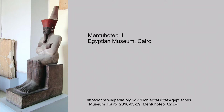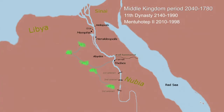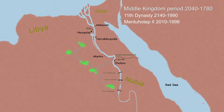It was Mentuhotep II who secured the oasis outposts along the desert roads in the western desert, the same side as Libya. He secured those outposts from criminals, gangs, and thieves, and helped the people set up farms protected by patrols. They produced more grains and other crops for Egypt, and the oasis outposts also became a source of military recruiting.